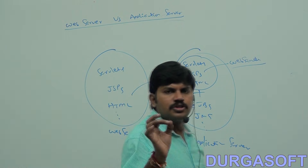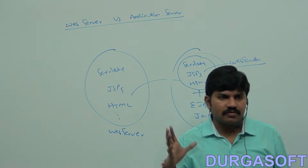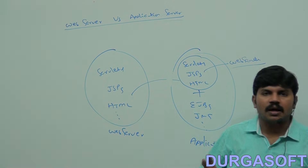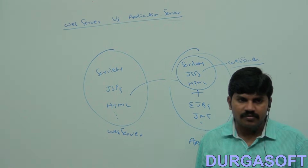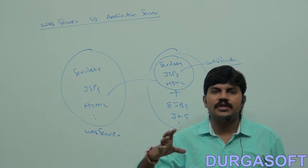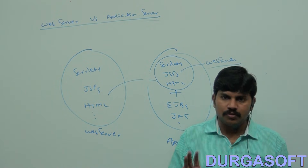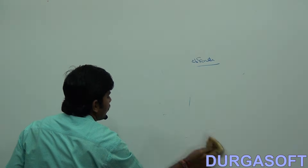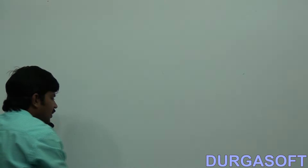A J2EE-compatible server is an application server, which is the superior server — any technology from Java J2EE is possible to support. This is the difference between web server and application server. In any interview, you may be asked this question, so you should have clear clarity on it.